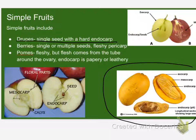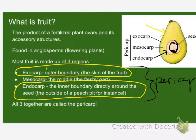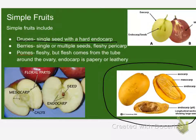So, berries. Single or multiple seeds, fleshy pericarp. What's the pericarp? All that stuff. Single or multiple seeds, but it's got a juicy, fleshy pericarp. Which one do you think that is? It's got a juicy, fleshy pericarp.